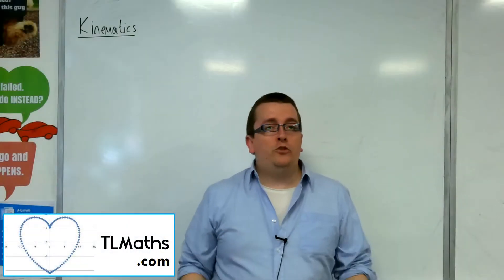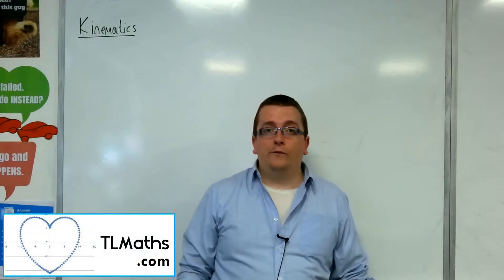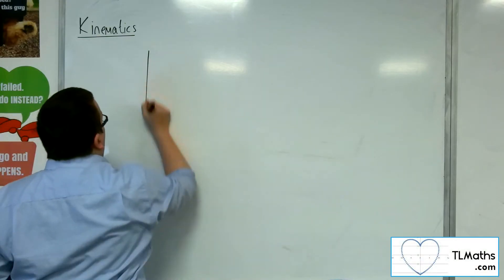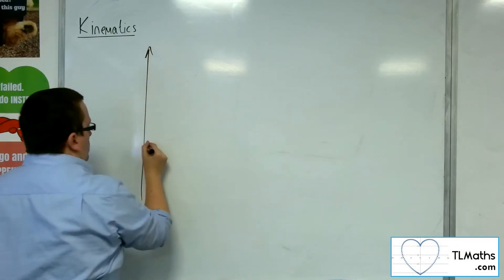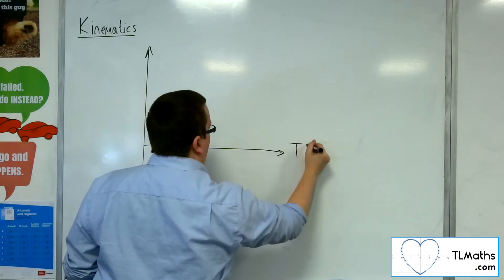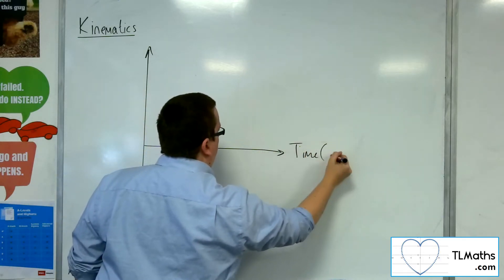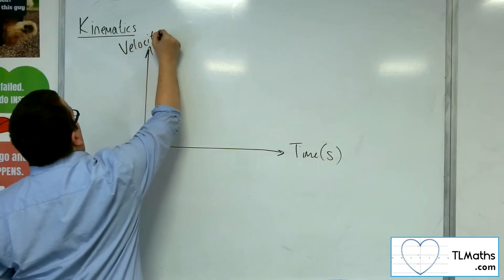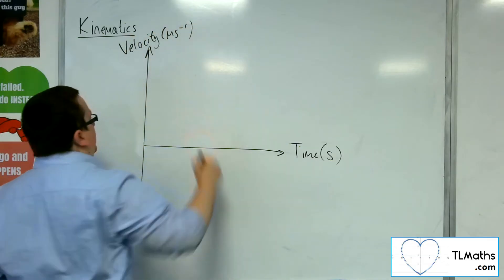So in this video, I want to introduce you to velocity time graphs. So velocity time, let's plot a graph. So here is time on the horizontal axis measured in seconds. And here is velocity, the vertical axis, measured in metres per second.